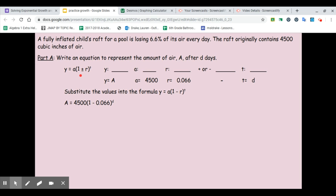And it should look like this: A equals 4,500 times parentheses 1 minus 0.066 to the d power. Now the only thing I can really evaluate is my parentheses here. So I'll do that subtraction.